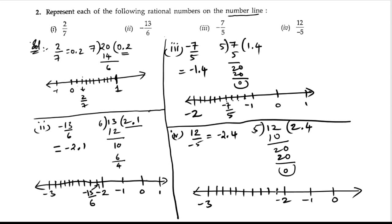So it is minus 2.4, 1, 2, 3, 4. Here it is minus 2.4, that is 12 by minus 5. So this is the second problem.